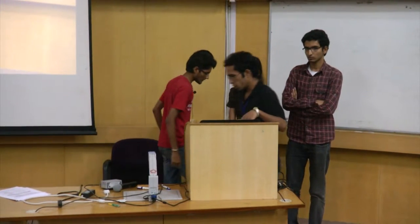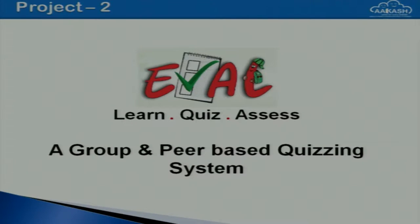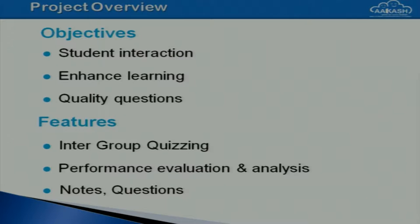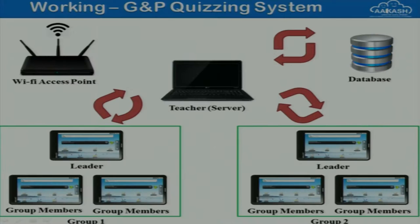Second project: EVAL — a group and peer-based quizzing system for classrooms. The main objective is increased student-student interaction and enhanced learning. An inter-group quizzing system enables students to ask questions among themselves. At the end of the quiz, the system generates a performance report and gives an analysis to the teacher.